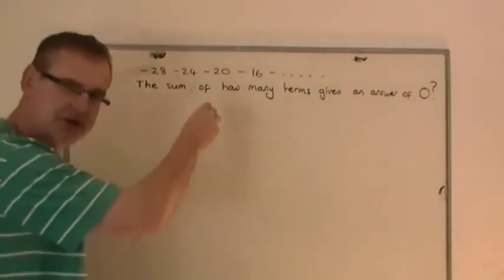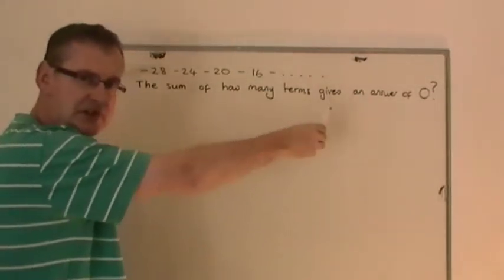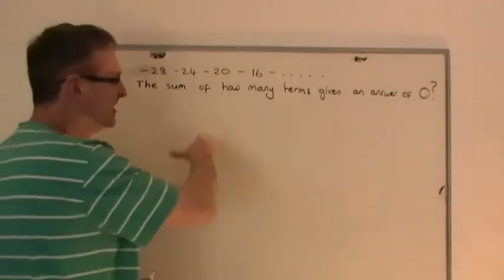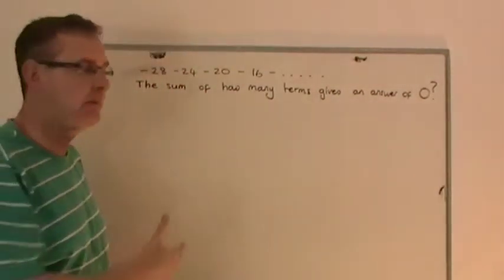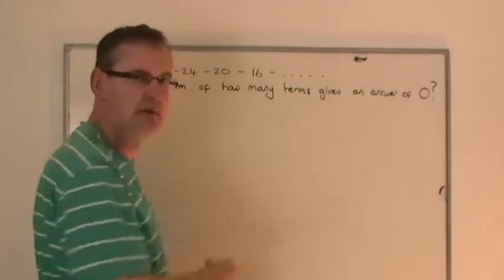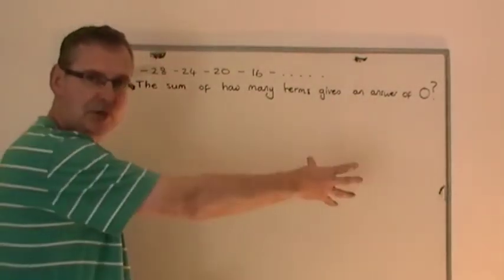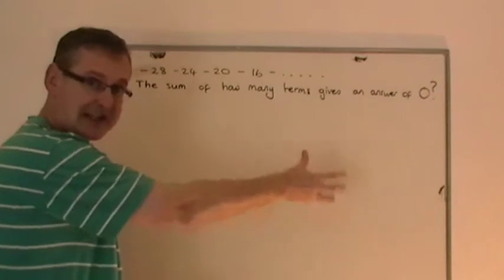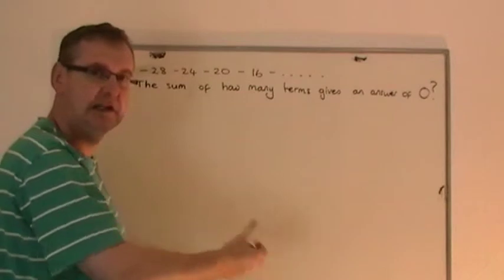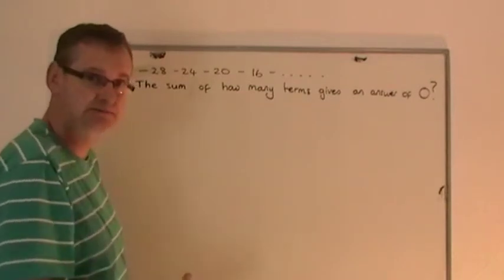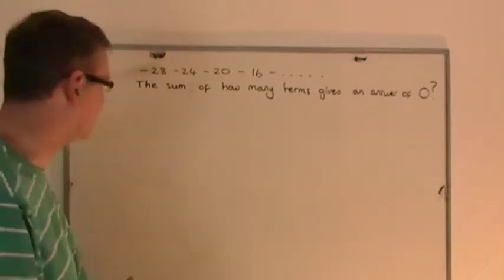And as soon as you start getting them to be positive, when you add up the negatives to the positives, they start canceling each other out. There will be a certain number of terms whereby the value of the positives is going to be exactly the same as the value of the negatives, and so the two cancel out exactly, giving an answer of zero. And that's what this question is asking.